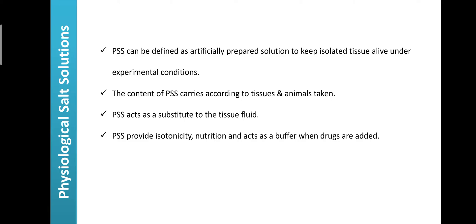That pH is ideal for conducting in vitro pharmacological studies. If any alteration in the pH occurs, the organ fails or dies. If pH increases, it creates a condition called respiratory alkalosis, which is responsible for irreversible death of the organ and tissues. If pH decreases below 7.2, it can cause respiratory acidosis, and the tissue fails due to hyperactivity or acidosis.